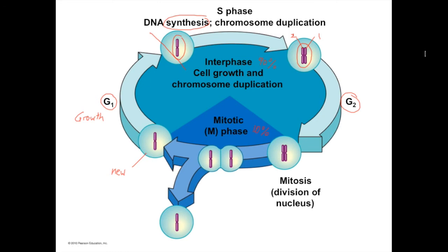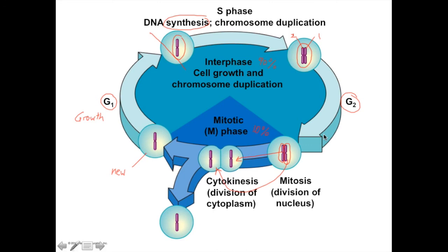Mitosis is the division of the nucleus. During this last part of the cell's life cycle, the genetic material is actually divided — some going to one cell and some going to the other. And lastly, when all the genetic material is divided, the cell itself divides, and that's called cytokinesis. A lot of things happen during the life cycle of a cell, and this is a simplified diagram to give a basic understanding of what needs to happen — but that's the cell cycle.